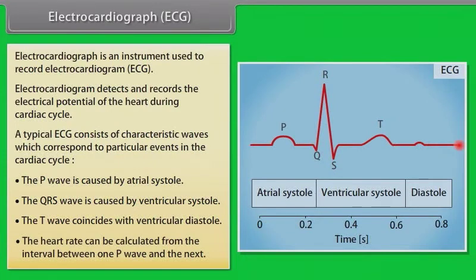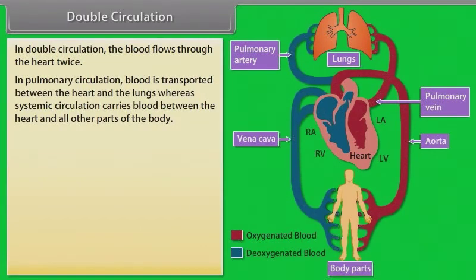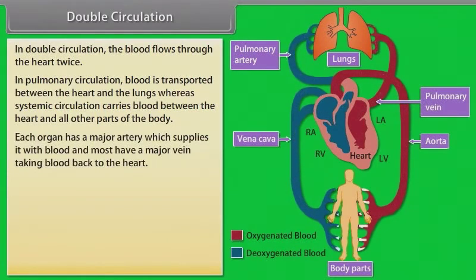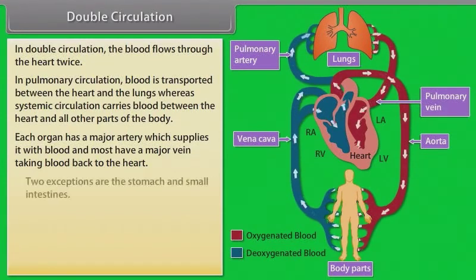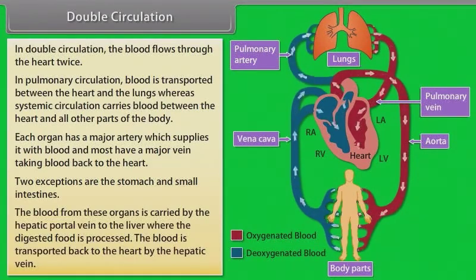In double circulation, blood flows through the heart twice. Pulmonary circulation transports blood between the heart and the lungs; systemic circulation carries blood between the heart and all other parts of the body. Each organ has a major artery supplying blood and usually a major vein returning it. Two exceptions are the stomach and small intestines — their blood is carried by the hepatic portal vein to the liver for processing, then returned to the heart by the hepatic vein.